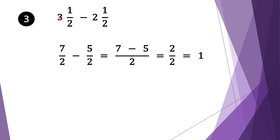Moving on to question three, we have three and a half minus two and a half. Again we convert into normal fractions: two times three is six, six plus one is seven, and we bring our denominator two down. We do the same for the second fraction: two times two is four, four plus one is five, and we bring our denominator two down. We take two as a common factor: two divided by two is one, one times seven is seven. We bring our subtraction sign and do the same for the second fraction: two divided by two is one, one times five is five.